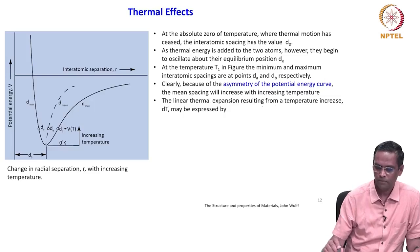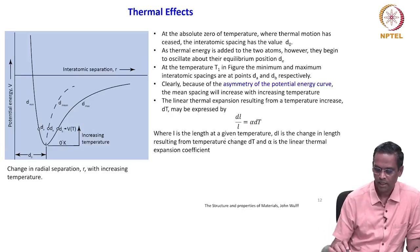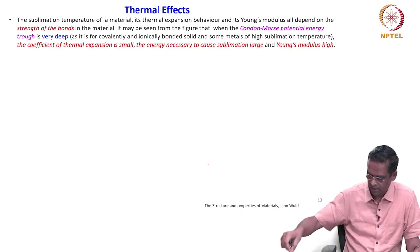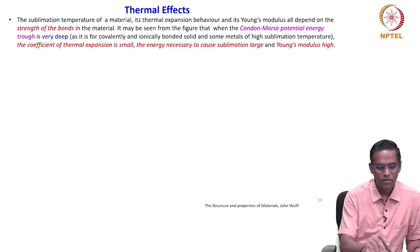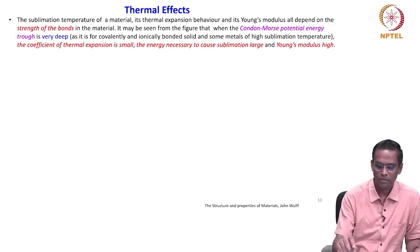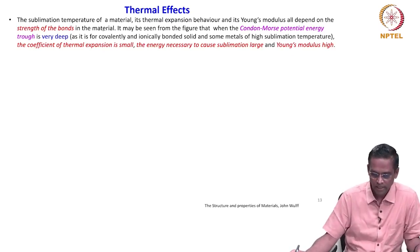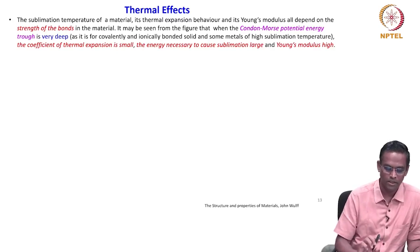Because of the asymmetry of the potential energy curve, the mean spacing will increase with increasing temperature. The linear thermal expansion resulting from a temperature increase dT may be expressed as dL/L = α dT, where alpha is the thermal expansion coefficient, L is the length at the given temperature, and dL is the change in length resulting from temperature change dT. The sublimation temperature of a material, its thermal expansion behavior, and its Young's modulus all depend on the strength of bonding. We were relating bond strength with elastic constants like stiffness, and now we also see that sublimation temperature is connected to the strength of the material.